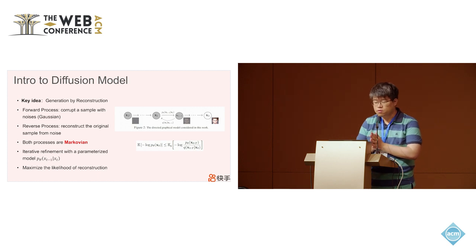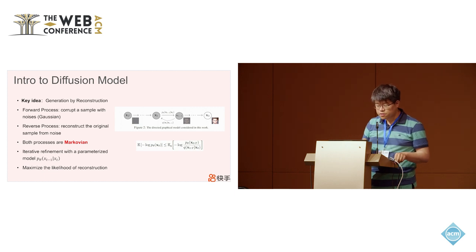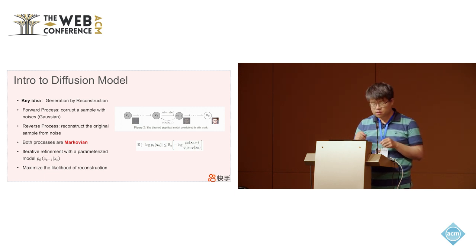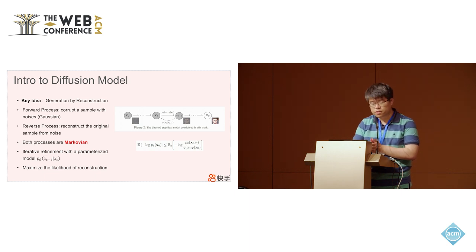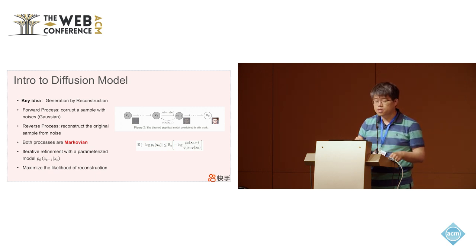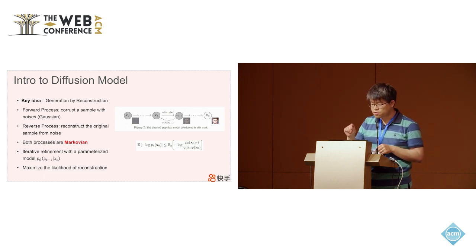Before going into the details of our model, let's look at what a diffusion model is. The key idea is to generate by reconstruction. A diffusion model consists of two processes. The first is the forward process, which corrupts the sample with noise — for image synthesis tasks, it uses a Gaussian distribution. The second is the reverse process. After the forward process, the image is corrupted step-by-step until it becomes pure Gaussian noise. The reverse process then tries to reconstruct the original sample from the corrupted sample using a parameterized model.